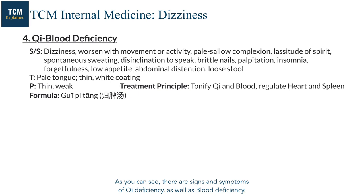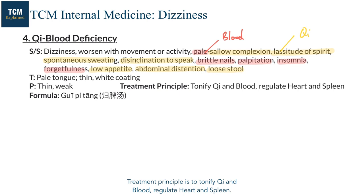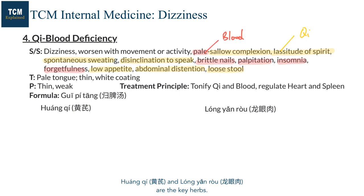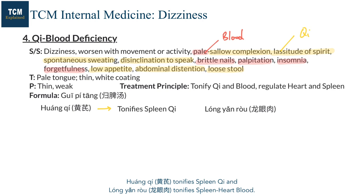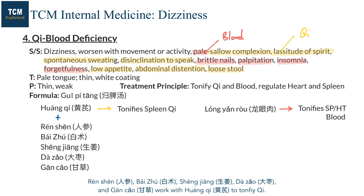As you can see, there are signs and symptoms of qi deficiency as well as blood deficiency. The treatment principle is to tonify qi and blood, and regulate the heart and spleen. The spleen is the post-heaven source responsible for the production of qi and blood, and the heart governs blood. Huang Qi and Long Yan Rou are the key herbs. Huang Qi tonifies spleen qi, and Long Yan Rou tonifies spleen and heart blood. Ren Shen, Bai Zhu, Sheng Jiang, Da Zao, and Gan Cao work with Huang Qi to tonify qi.